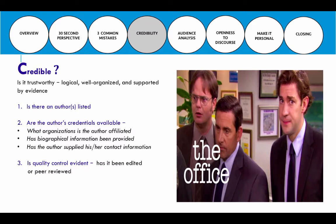Quality control refers to whether the information has been edited or peer-reviewed. That's why teachers sometimes require scholarly articles — scholarly sources are not published on a website or in a news article, but rather in an academic journal that has been peer-reviewed. Peer review means there is a group of reviewers — sometimes three, sometimes six or seven — and when information is submitted to that journal, an editor sends it out to everyone on the editorial review board.